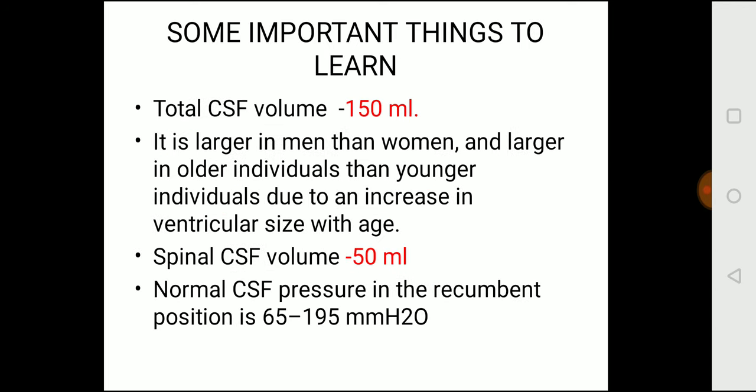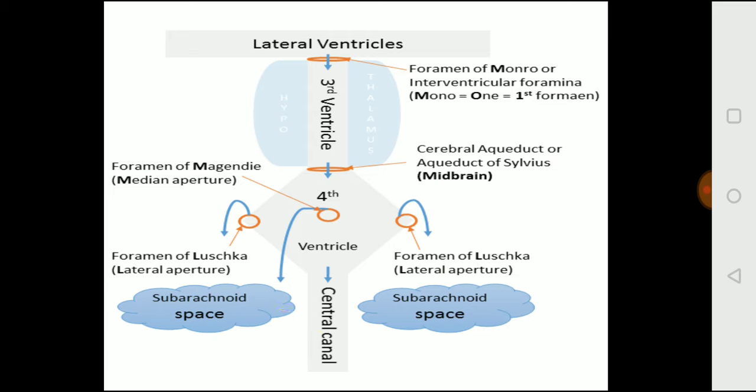Important values to remember: total CSF volume is 150 ml. In 24 hours, 500 ml of CSF is made. It is larger in men than women, and larger in older individuals — because older individuals have cortical atrophy, causing enlargement of ventricles and more space for CSF. Spinal CSF volume is 50 ml. Normal CSF pressure in the recumbent position is 65 to 195 mm water.